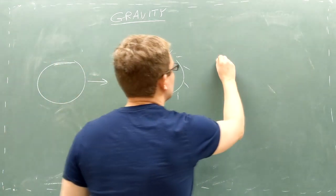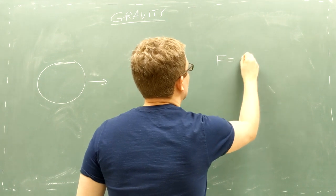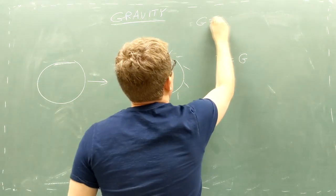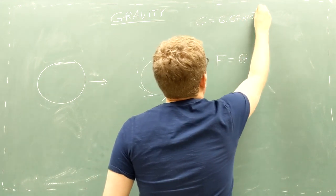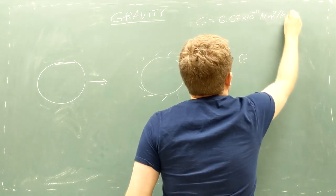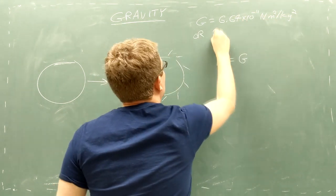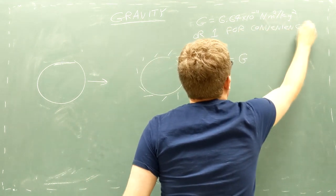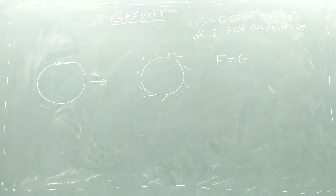The force of gravity depends on a number of factors. First, there's a constant that's the same throughout the universe. Although in the real world this number is very, very small, in our code we're going to set it equal to 1 to make the math simpler. We can change it later when we want to calculate real world forces.